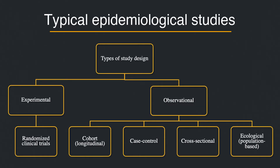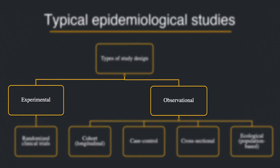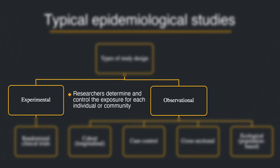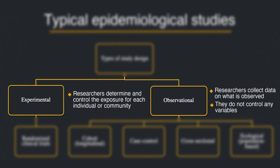Now, let's look at the typical examples of epidemiological studies. There are two main types of research designs: experimental and observational. In experimental research, the researchers determine and control the exposure for each individual or community, and then track the individuals or communities over time to detect the effects of the exposure. In observational research, the researchers collect data on what is observed. They do not control any variables.